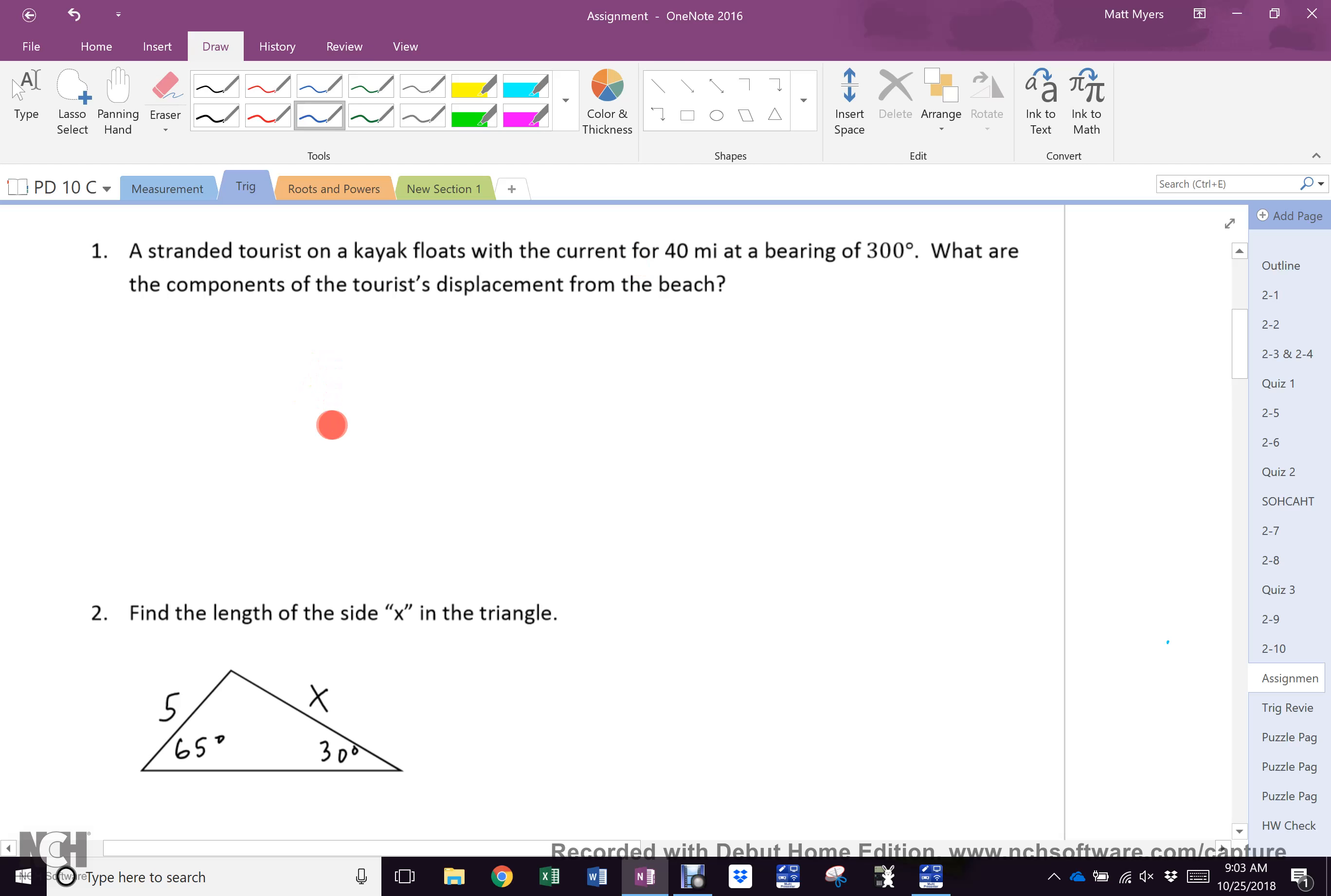All right, we've already talked about this one. He goes off at 300. If he goes off at 300, and this is 30, so this is 60. This is 40, so I have a 90-degree triangle there, don't I?